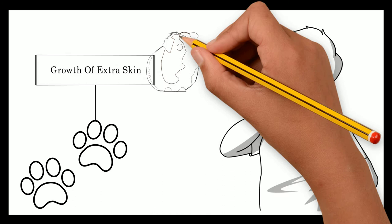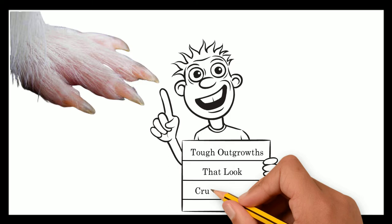Foot spurs are a growth of extra skin on a guinea pig's foot, in between their toes or on their heel. They are tough outgrowths that look crusty and dry, and protrude out like fingernails from the bottom of a guinea pig's foot.